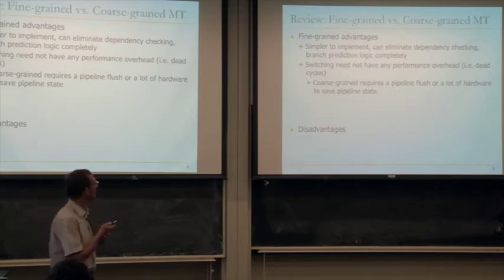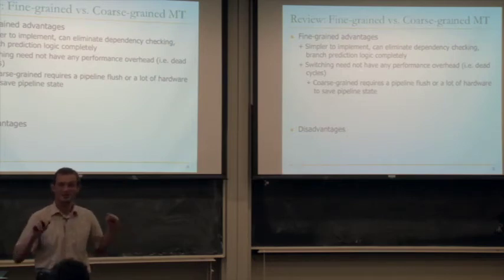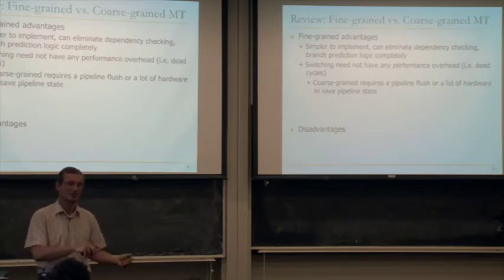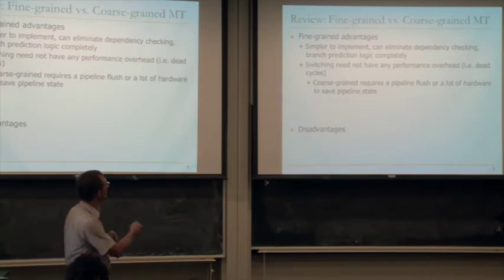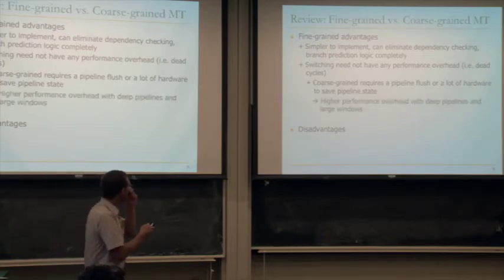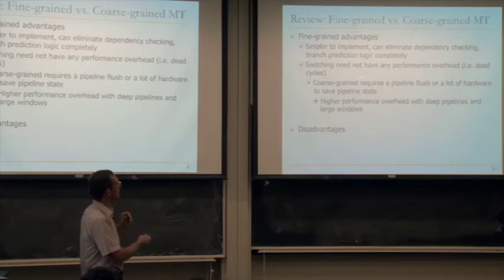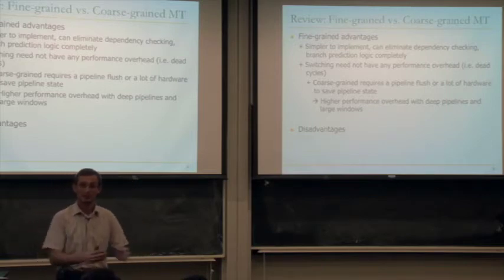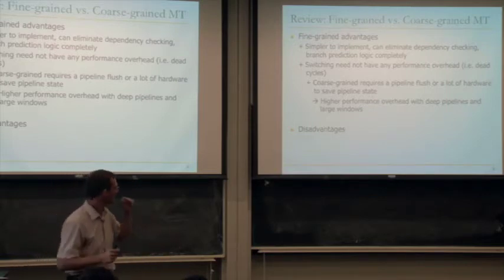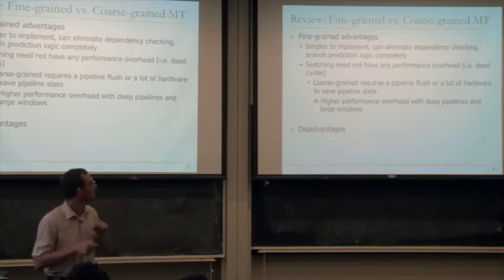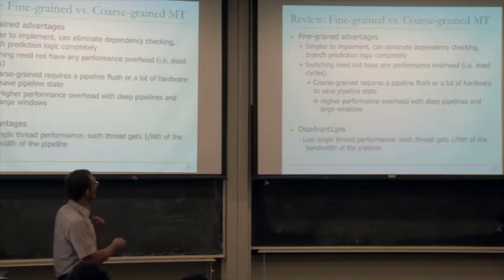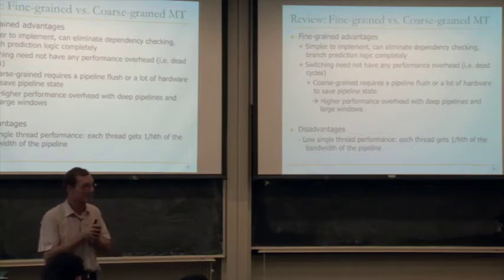Think about it this way: coarse-grained multi-threading optimizes a pipeline for a single thread, and when that thread stalls, you switch. There is some support for switching quickly, but not as fast as fine-grained. The overhead of pipeline flush becomes larger with deep pipelines and large windows because you're throwing away more work. Of course, the disadvantage of fine-grained is low single-thread performance because you've optimized for multi-threading.